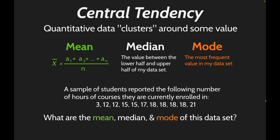For example, consider a sample of students reporting course hours: 3, 12, 12, 15, 15, 17, 18, 18, 18, 18, and 21. The mean comes to about 15.18 repeating. The median is 17 — right in the middle of the ordered sequence. The mode is 18, the most frequently occurring value.